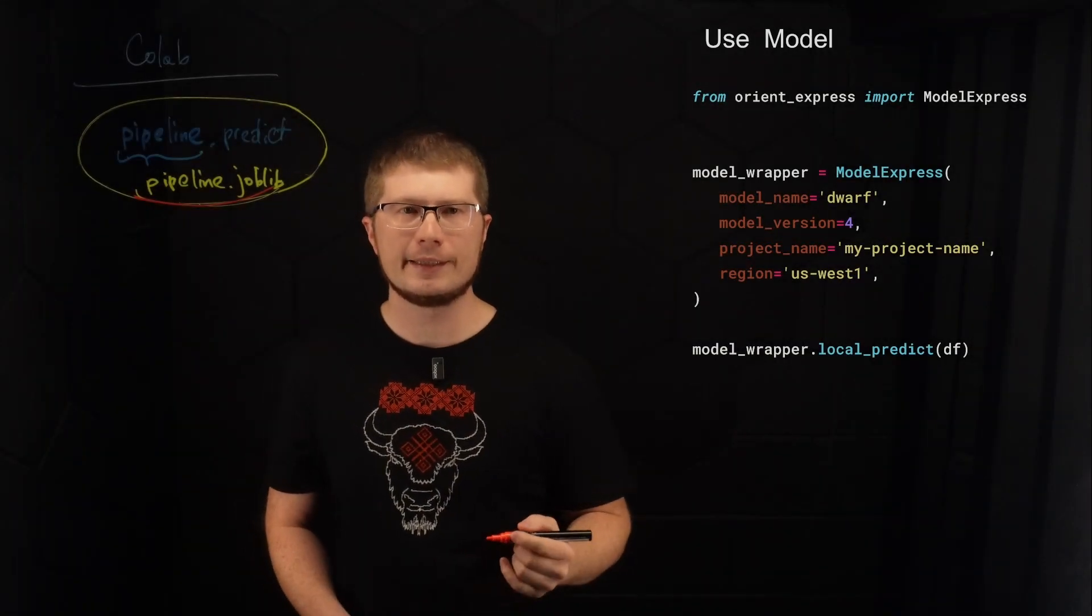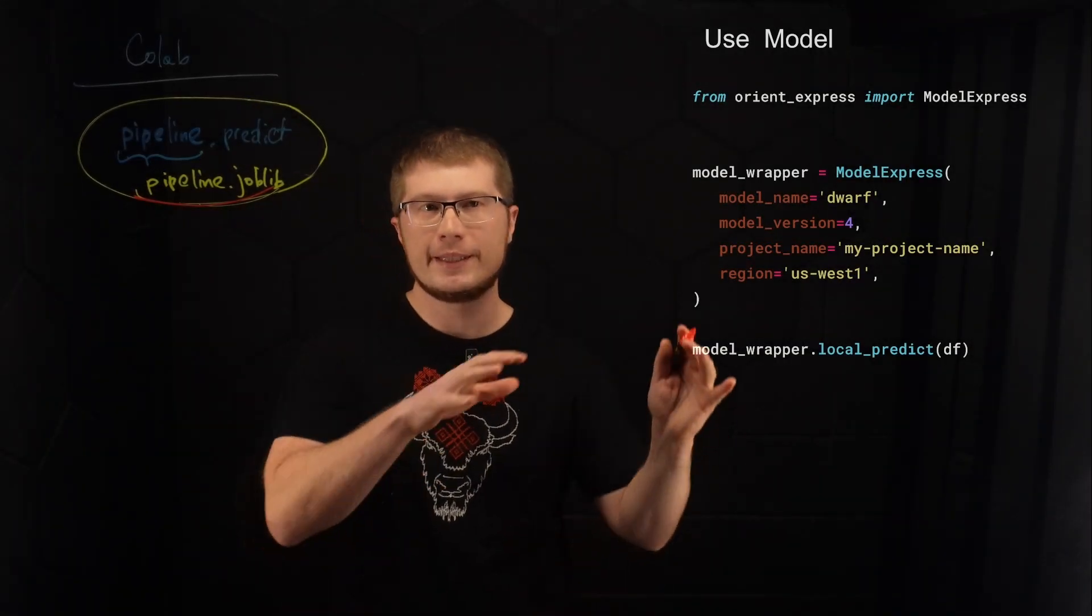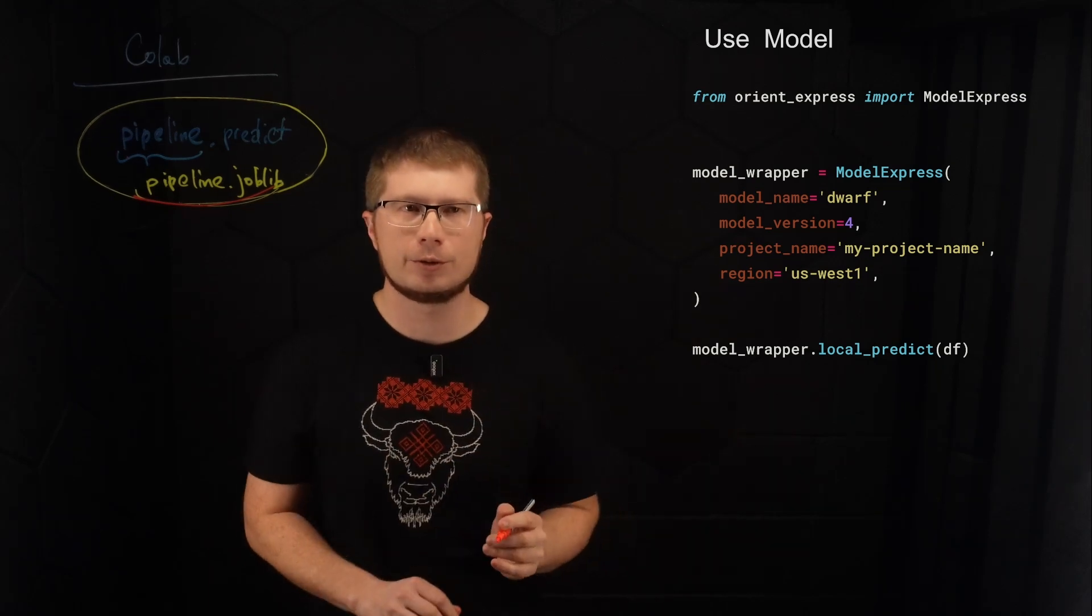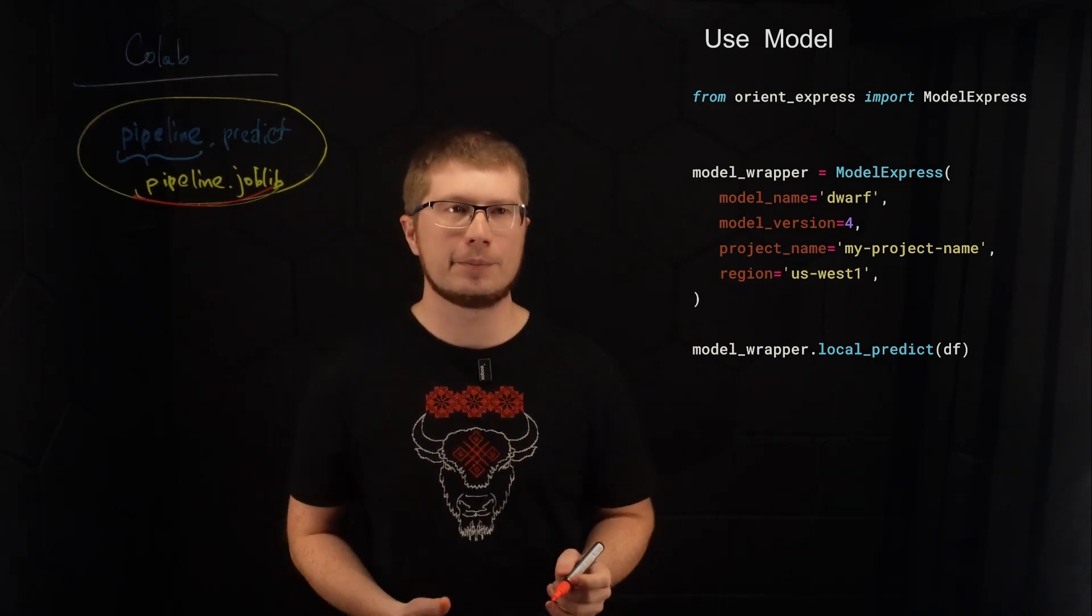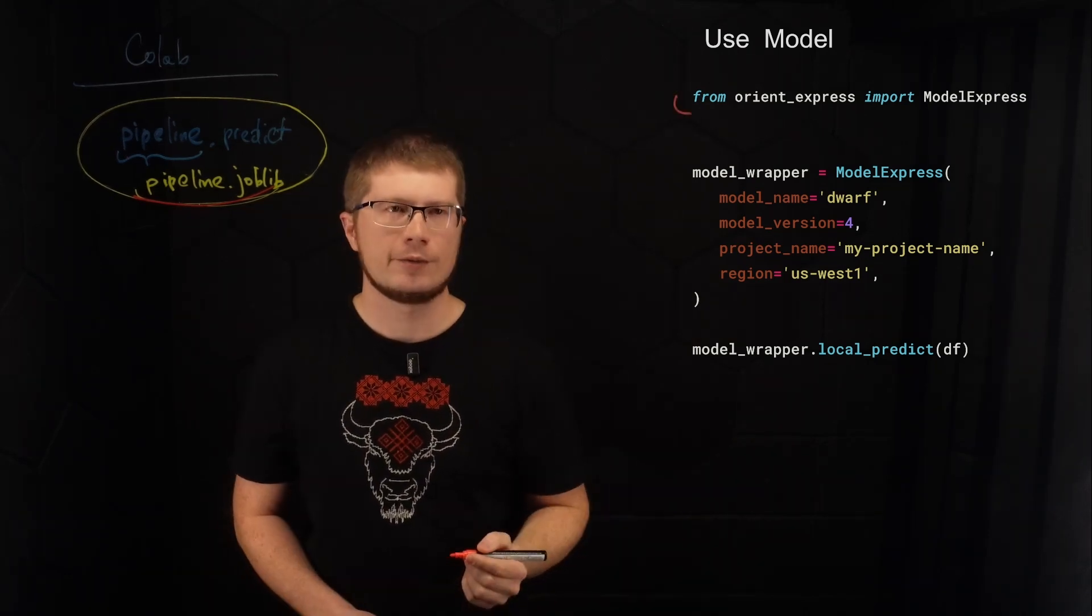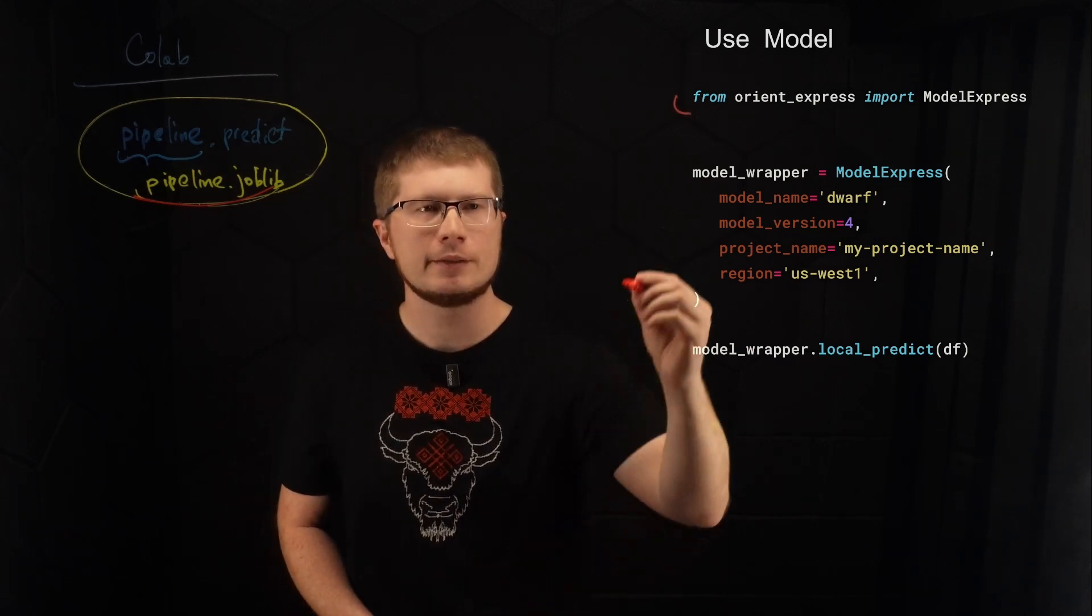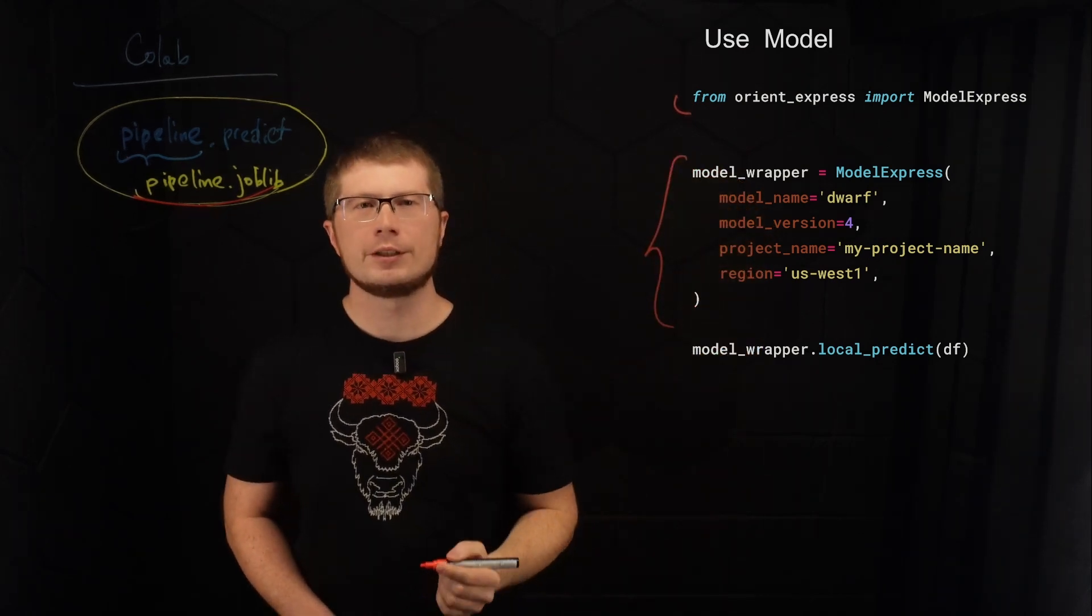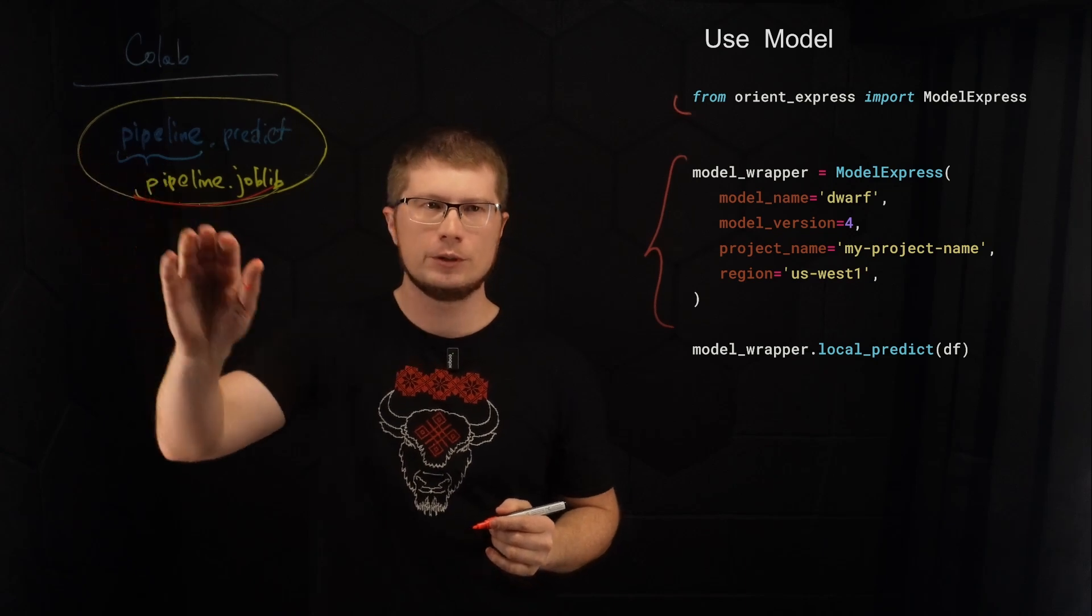Using the model inside the pipeline is very similar, but this time the code is executed inside the pipeline component. First step we import Orient Express. The second one we initialize the wrapper. But this time we don't have this model.